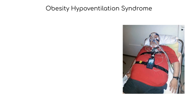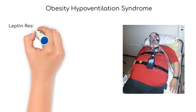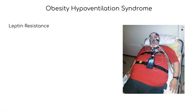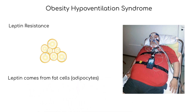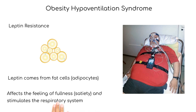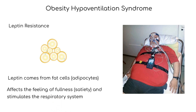Another disorder that causes hypersomnia is obesity hypoventilation syndrome. This syndrome may be associated with leptin resistance. Leptin is a hormone produced by fat cells, or adipocytes, that affects satiety or fullness. In leptin resistance, people don't feel as full when eating as they should. Leptin also has an effect on the respiratory system and acts as a stimulant.